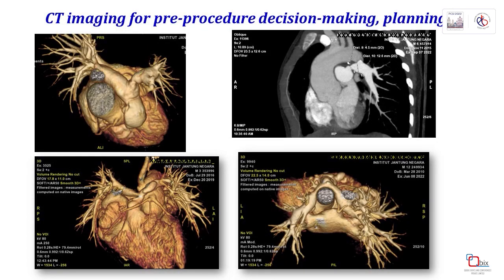CT angio is increasingly relied upon as it gives important perspective on the anatomy we are dealing with. In some complex lesions, it is valuable for decision-making where surgery is a safer option, such as where the coronary artery might be at risk, or where the pulmonary arteries are stretched and hug the aorta post-Lecompte. For simpler lesions, echocardiography may be sufficient, but CT may help in pre-procedure planning, for example, selecting the right stent size and length.